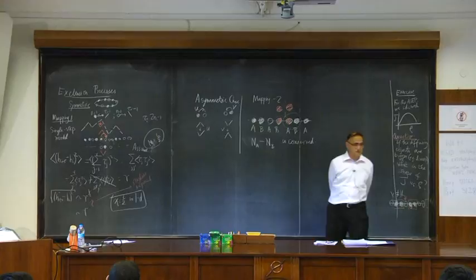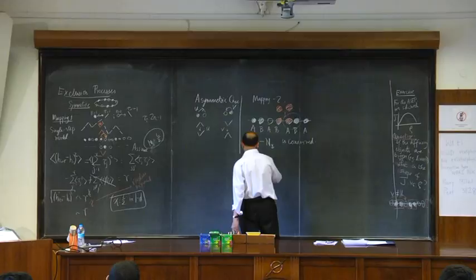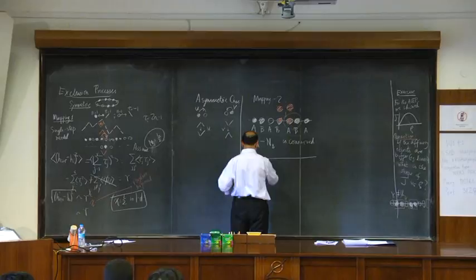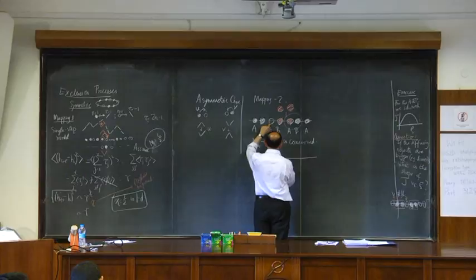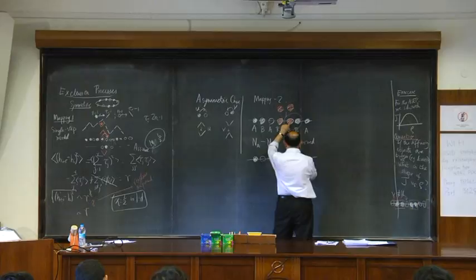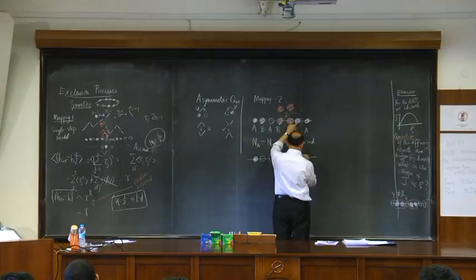Am I allowed to do that? Yes, nobody can stop me. Let me take this configuration and see what happens. On the A sub-lattice we have a particle; on B we have a hole, so it stays empty; this full B site becomes empty in the exclusion process. This is full, this is empty, and that is full — here is a mapping of a configuration.